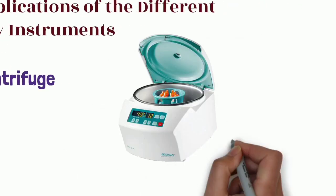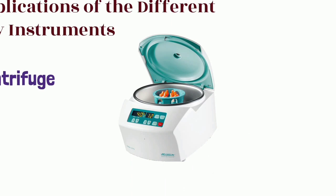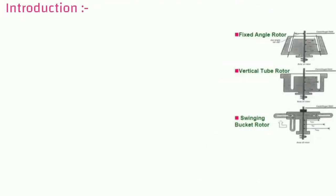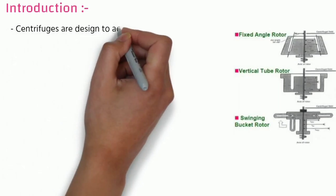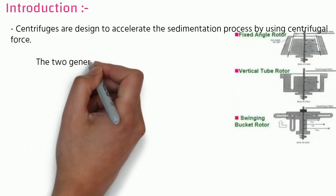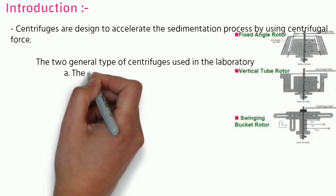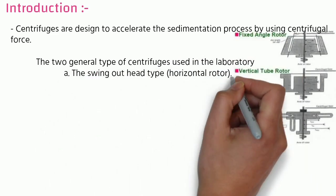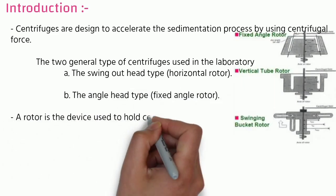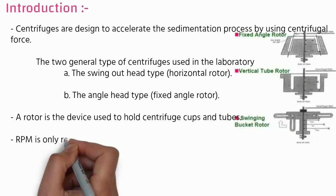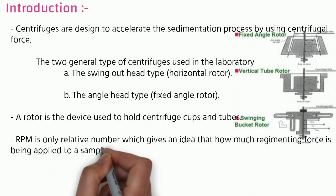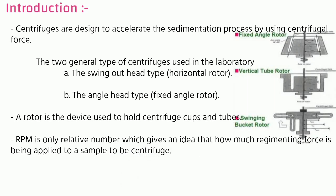In this lecture we will cover what centrifugation is. Centrifuges are designed to accelerate the sedimentation process by using centrifugal force. The two general types of centrifuges used in the laboratory are the swing-out head type (horizontal rotor) and the angle head type (fixed angle rotor). A rotor is the device used to hold centrifuge cups and tubes. RPM is a relative number which gives an idea of how much sedimenting force is being applied to the sample to be centrifuged.